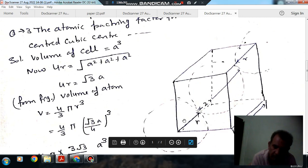The radius of each atom is R. So this is R and this is your two R. This is R.